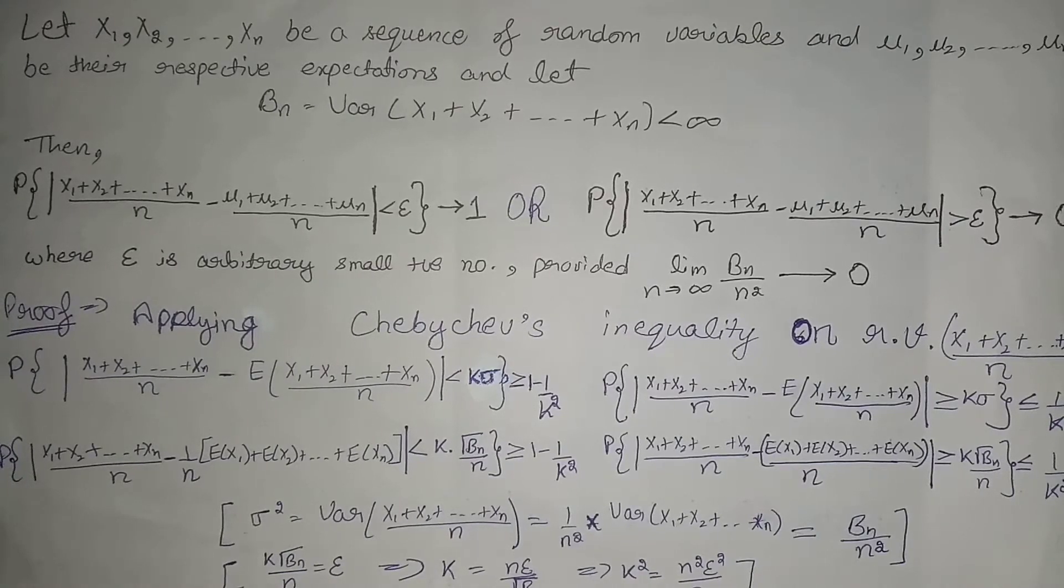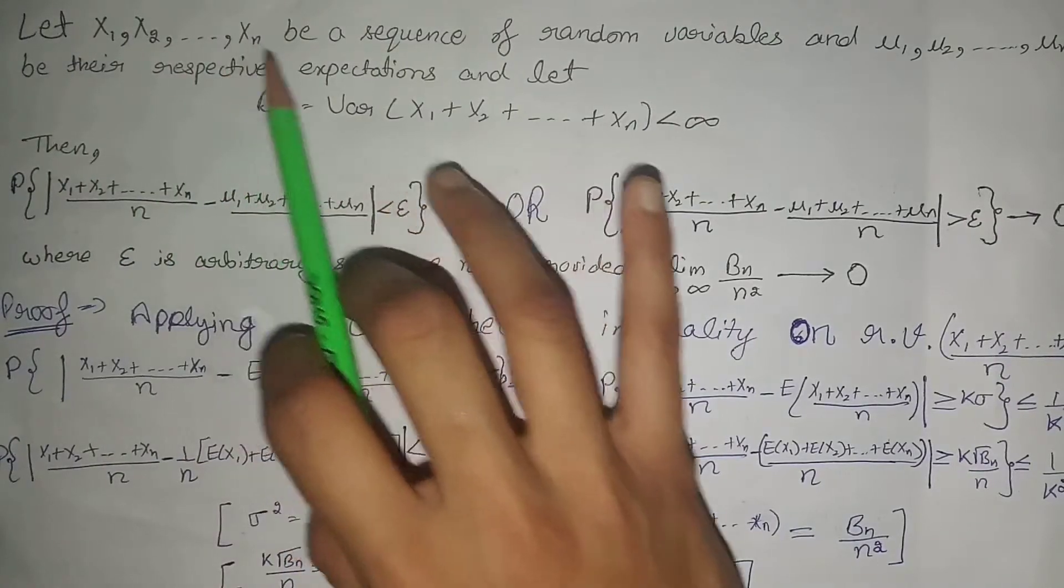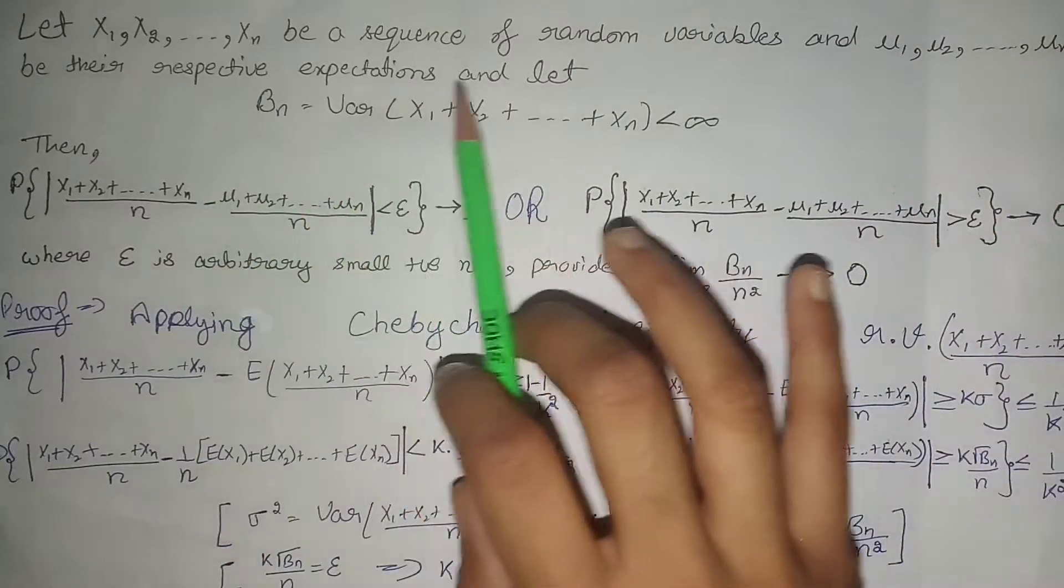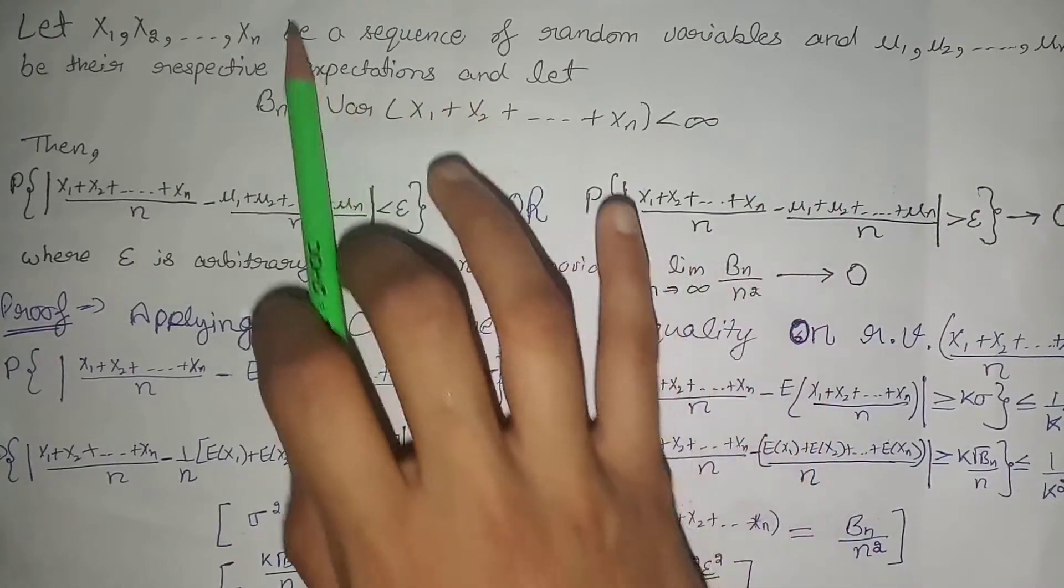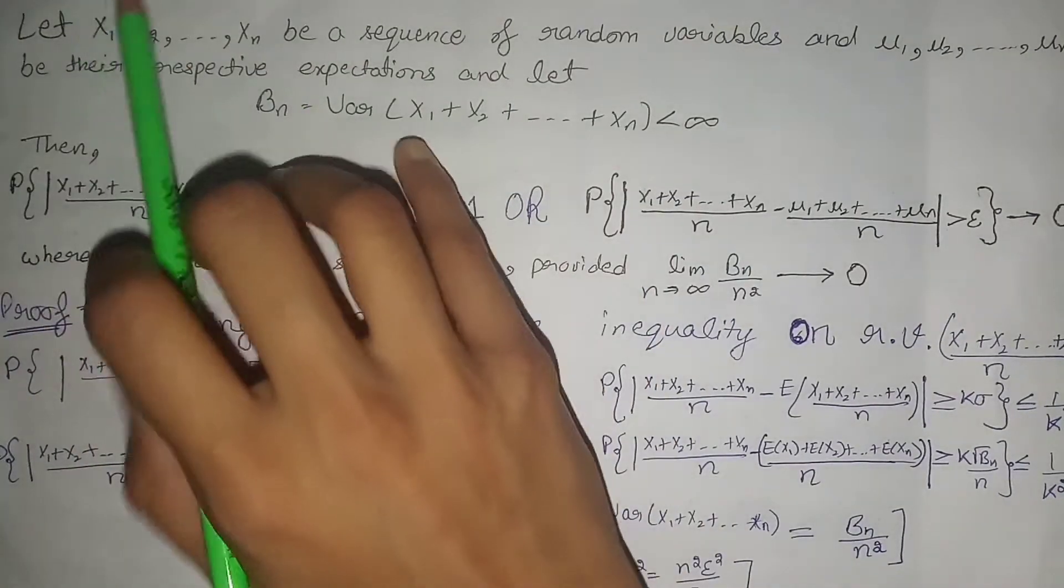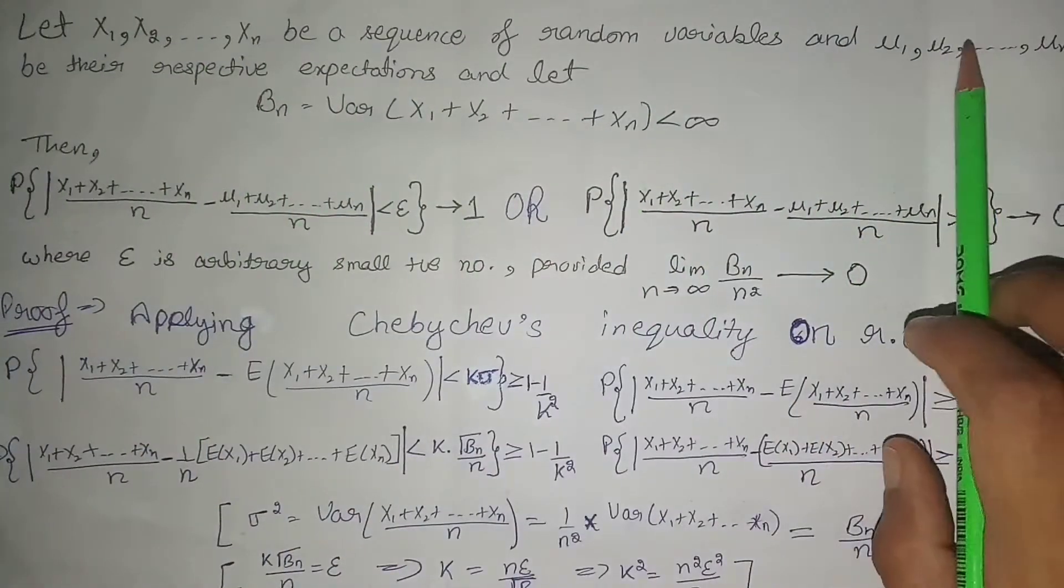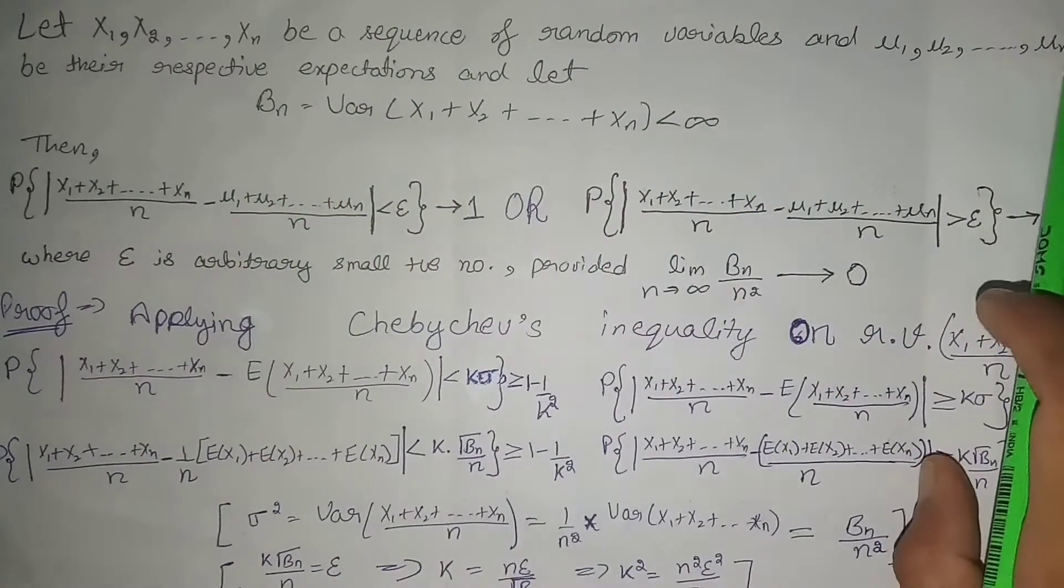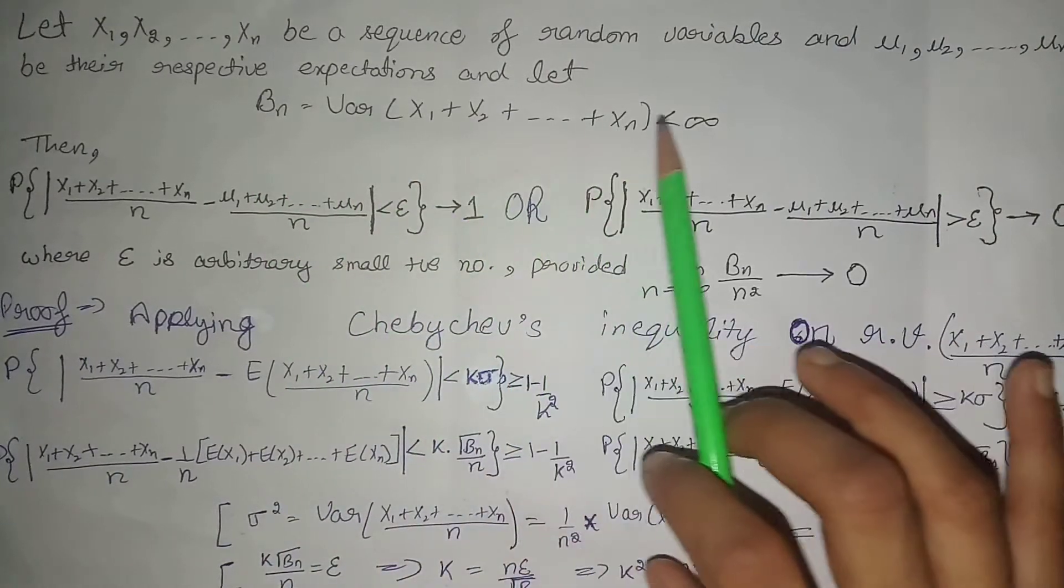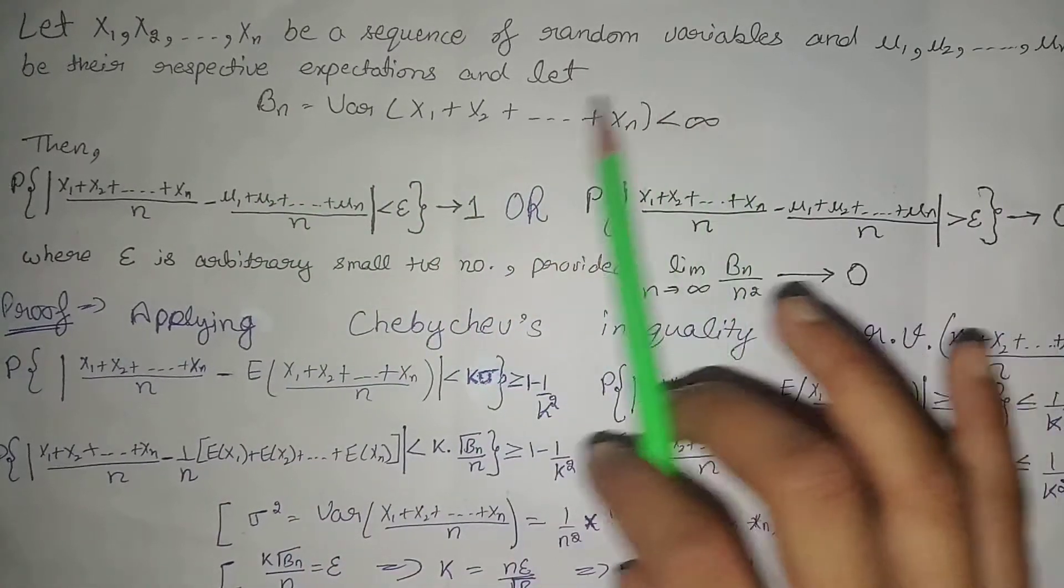Weak law of large numbers: Let x1, x2, ..., xn be a sequence of random variables and mu1, mu2, ..., mun be their respective expectations. That is, expectation of x1 is mu1, x2 is mu2, and so on up to xn is mun. Let bn equal the variance of x1 plus x2 up to xn, and it is less than infinity, meaning this bn term is finite.